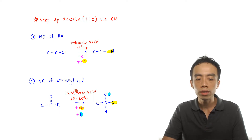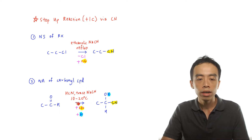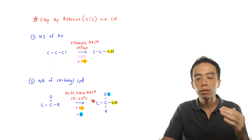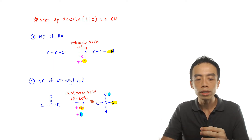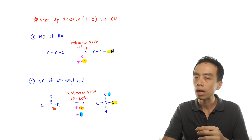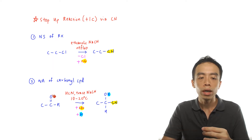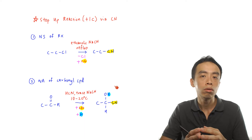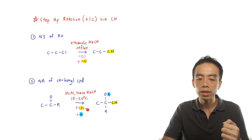if I use HCN, trace NaCN, at a low temperature of 10 to 20 degrees C, basically what I'm doing is I'm adding the nitrile to the carbonyl carbon. The C double bond O will open up, and the oxygen will become an alcohol functional group.